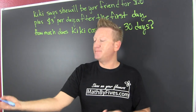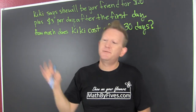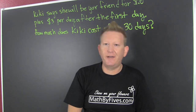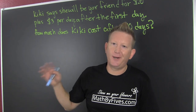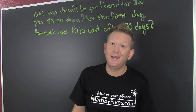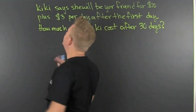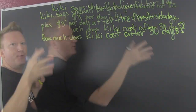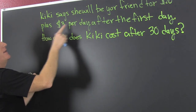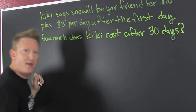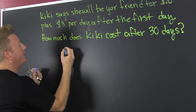I have down here just making a generic fixed cost plus a daily cost problem. I was listening to music while erasing the board. So what's Kiki cost? Her fixed cost is 20 bucks just to be a friend, and then three dollars a day every day after. So we need to make a linear function for Kiki.